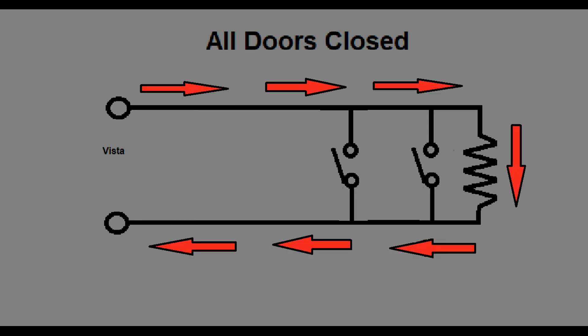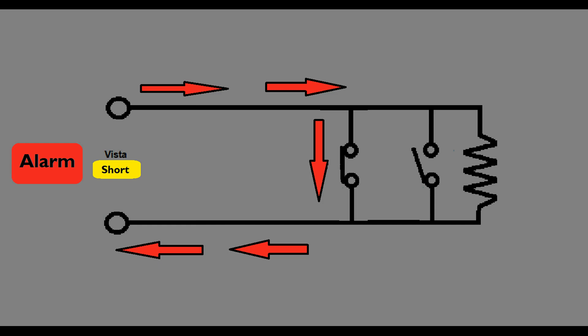With all the doors and windows closed, the current is forced to go through your end of line resistor. The Vista sees the resistor and says the zone is secure. If you open a door or window, the sensor contacts close. Current takes the path to least resistance, so will travel through the sensor. The Vista will see the short and activate the alarm. This operates the same for any sensor which is faulted.